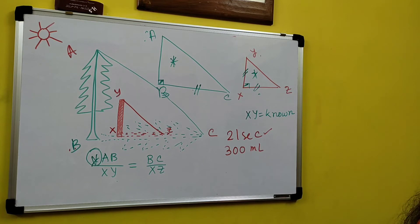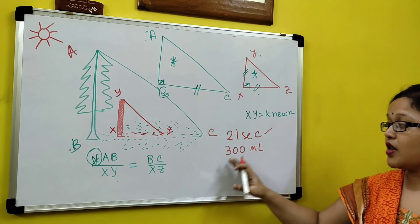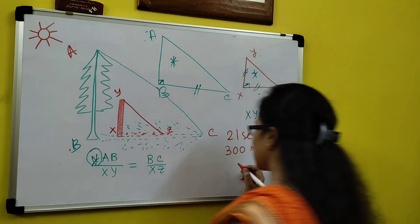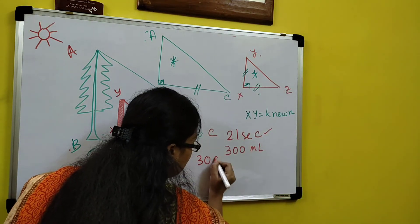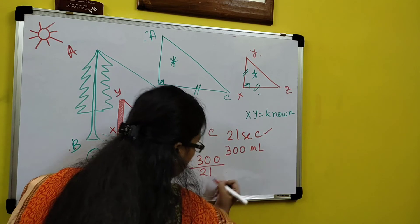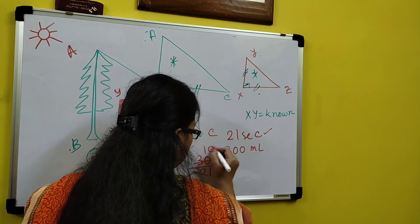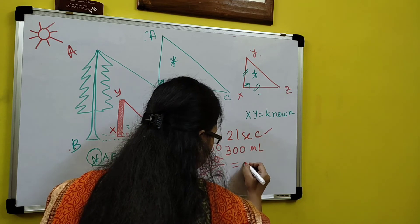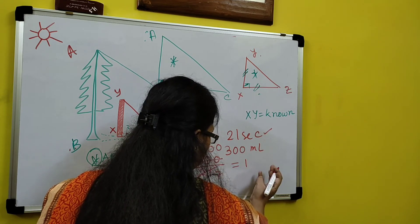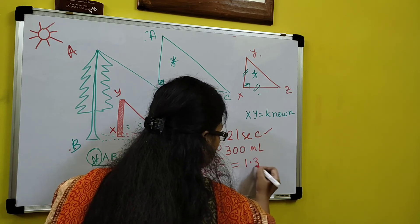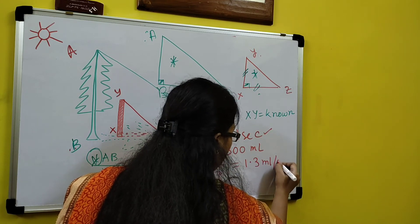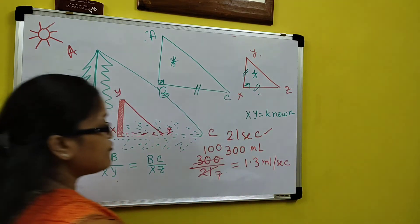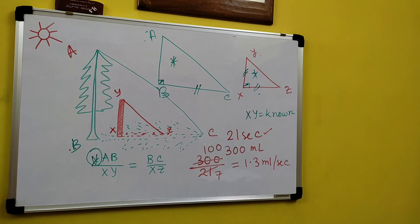So if I divided that 300 ml by 21 second, what I will have? 300 by 21. So 1.3 ml per second. Clear. So the flow of water is 1.3 ml per second.